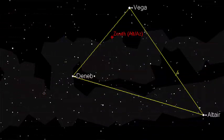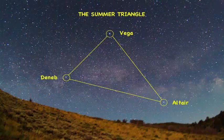The landmark of the summer sky is not a constellation in itself, but rather three bright stars of three separate constellations.